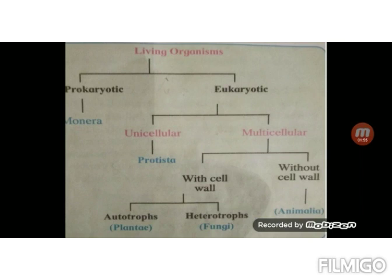Again, multicellular organisms are divided into two varieties, that is with cell wall and without cell wall. Students, you must be remembering this is the main characteristic to differentiate the plant cell and animal cell.